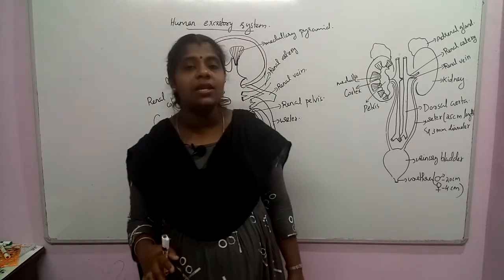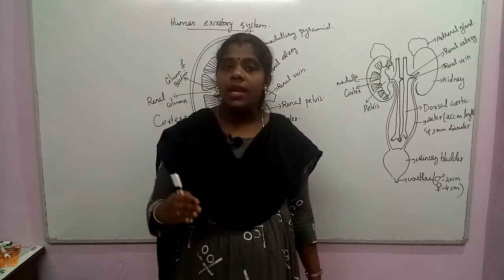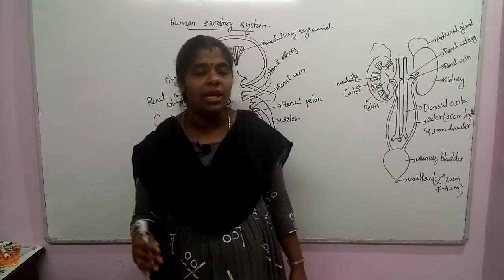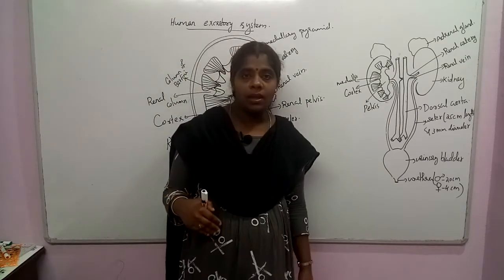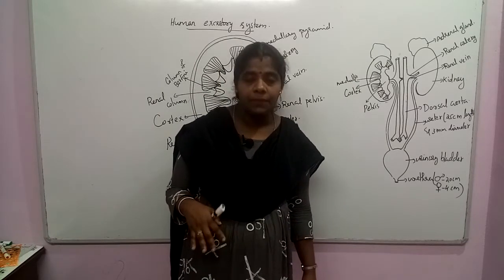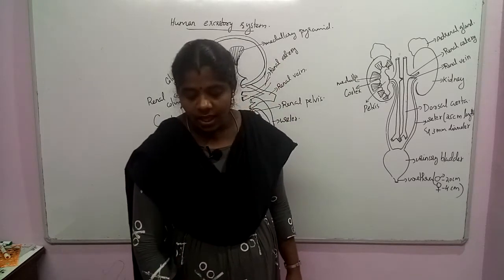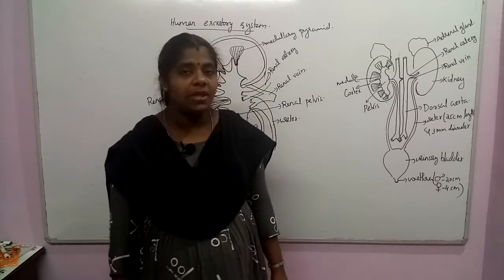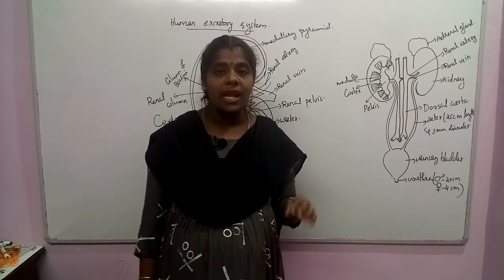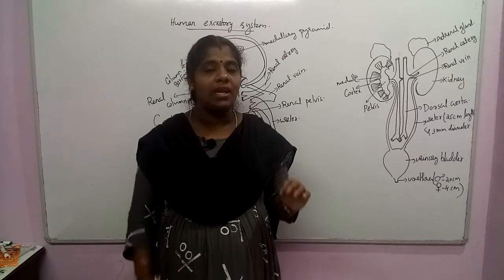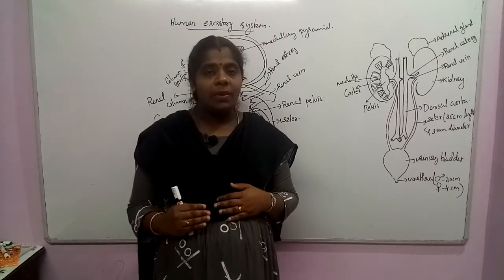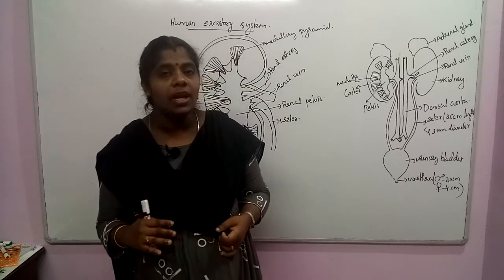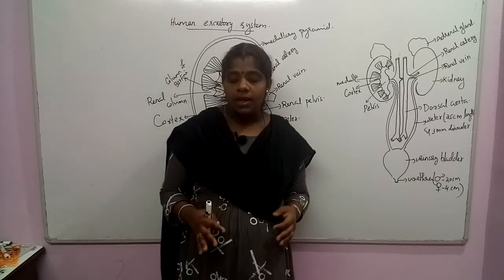The kidney is present in the dorsal wall of the inner abdomen. A pair of kidneys is situated there, and their exact position is from the last thoracic to the third lumbar vertebral region.